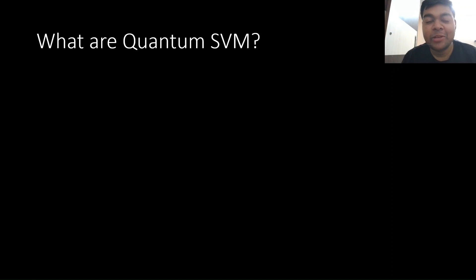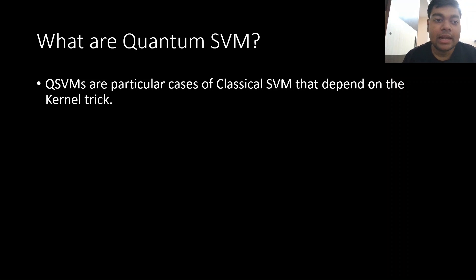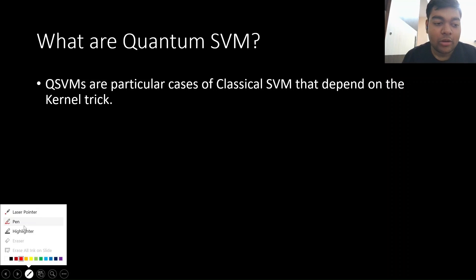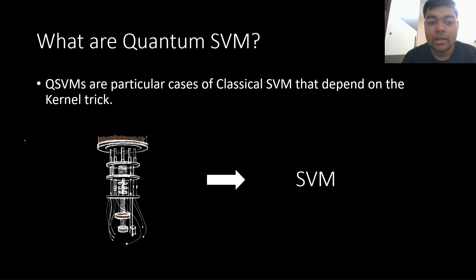So what are quantum SVMs anyway? A very simple way of describing quantum support vector machines is just a class of support vector machines that depend on the kernel. But obviously that's not all to it. Another key feature of quantum SVM is that some of the calculations of this particular SVM are done on a quantum computer.